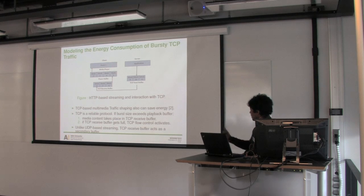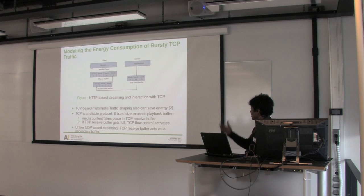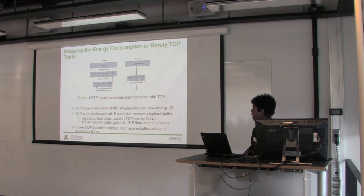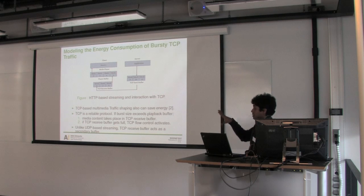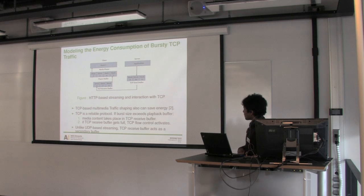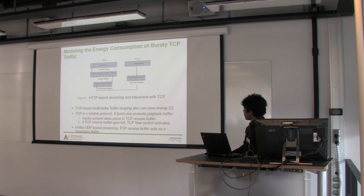Returning to why power consumption increases in TCP-based traffic shaping: the client is decoding content and has data at the media player. When the player buffer is filled, data starts gathering at the TCP buffer. When the TCP buffer is also filled, TCP flow control activates and data waits at the server — the client buffer is completely full. Since TCP is a reliable protocol there is no packet loss, but the TCP buffer can act as a secondary buffer in TCP-based multimedia traffic shaping, so the energy saving potential is slightly higher than in UDP-based streaming.